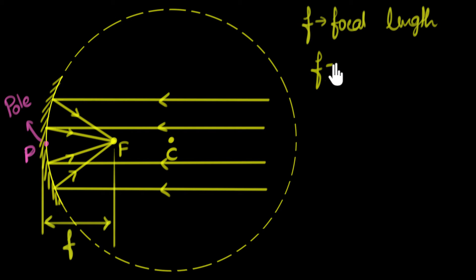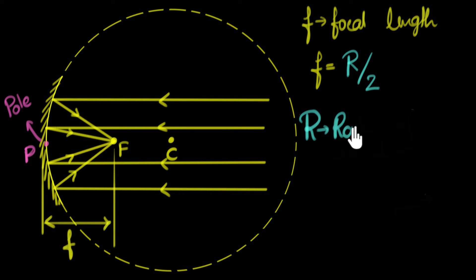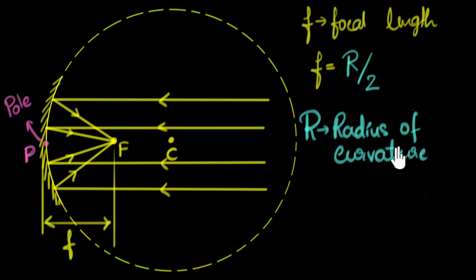So f turns out to be half the radius of the sphere. Using r for radius, f = r/2. That means if we know the radius of the sphere, we immediately know the focal length. For example, if the radius of the sphere is 20 centimeters, the focal length is 10 centimeters. By the way, this r — the radius of the sphere — is also given a name: it's called the radius of curvature. It's called so because it's literally the radius of this curve. We can't say radius of sphere because the sphere is imaginary, so we say radius of this curve.